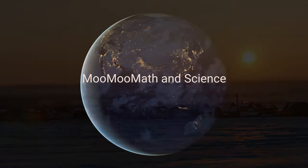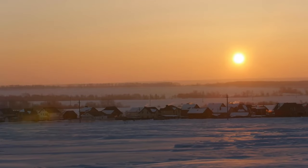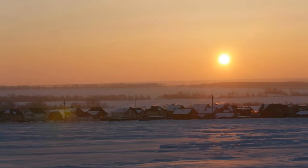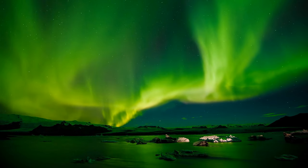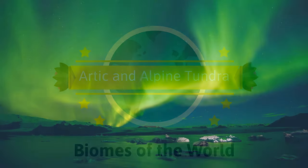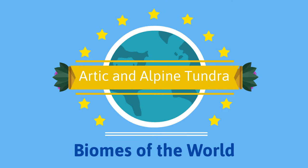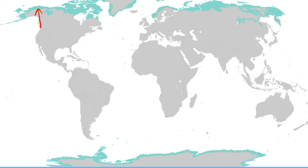Welcome to MooMooMath and Science. In this video I would like to talk about two types of tundra: the arctic tundra and the alpine tundra. The arctic tundra is found in North America, Asia, and Europe, and circles the arctic ocean and stretches southward down to the taiga.